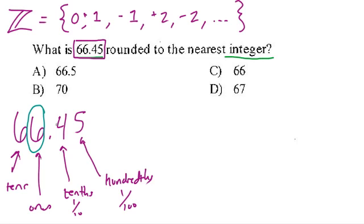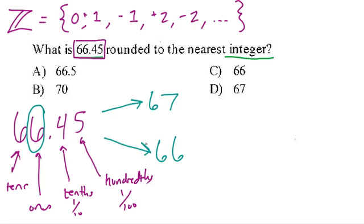So what do we do? You can tell that either this will be rounded up to 67 or it'll stay at 66, because 66.45 is between these two numbers. You can picture it as 66 and almost a half — 0.45 is almost one-half.